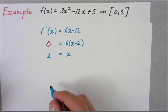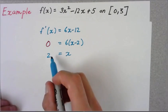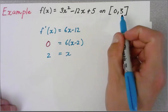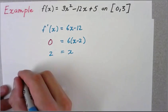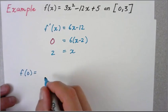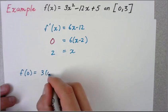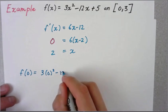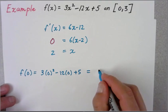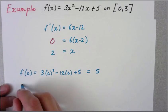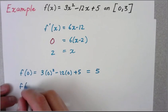What the closed interval method says is I've got to test this point, this endpoint, and this endpoint to see which gives me the maximum value. I'm going to look at f(0) first. I plug zero into my function, so it's going to knock out the first term and the second term, and I'm left with just 5 here.